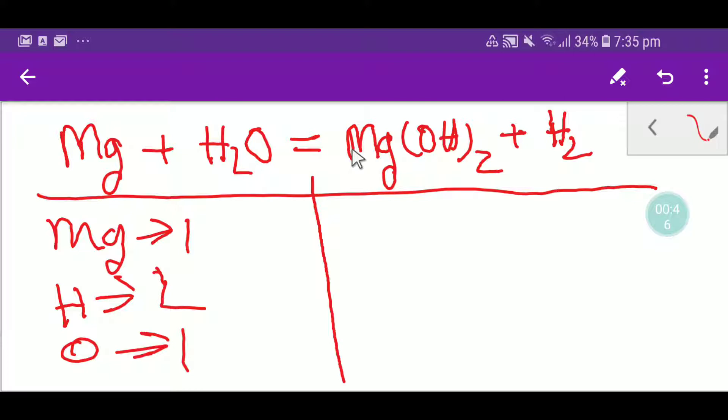And here we have one magnesium. Here we have, this two applies for all, so we have two oxygen and here we have two hydrogen. Plus we have two hydrogen, so that gives me four hydrogen.